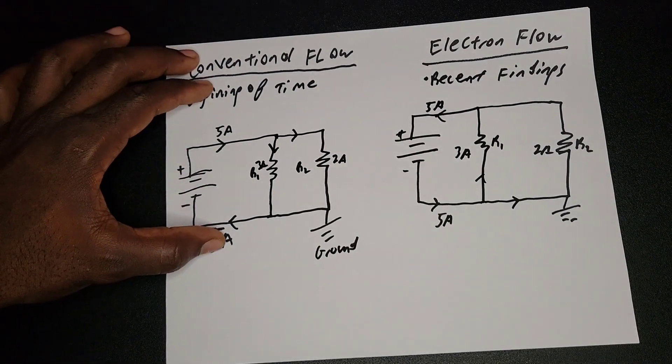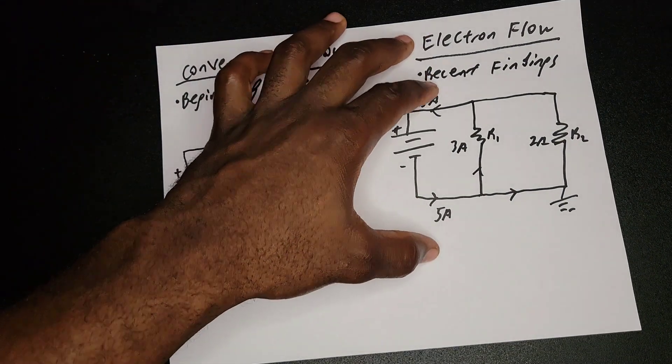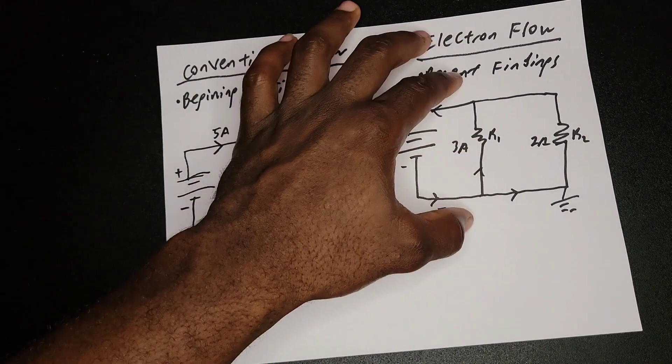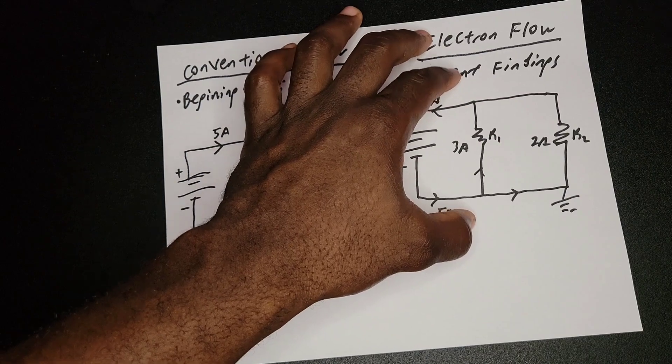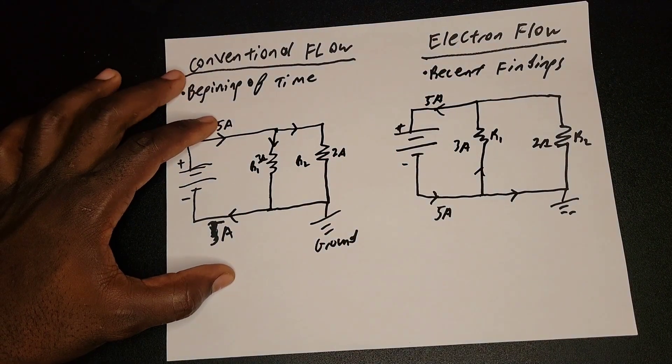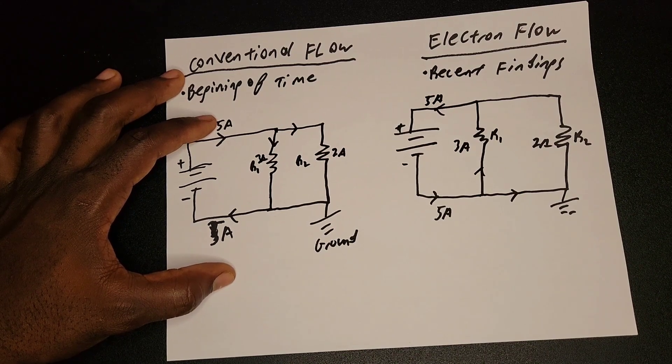That one is conventional flow, which is the original thing. And then the recent finding, or the new finding, is the electron flow. So some people like to look at it like this. I like to stick with conventional flow, because whatever you learn first, that will be easier to understand.